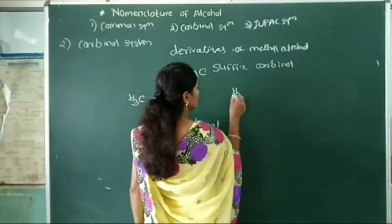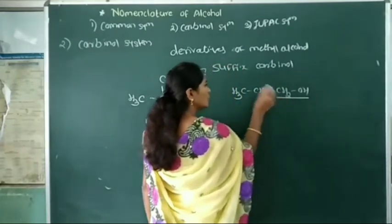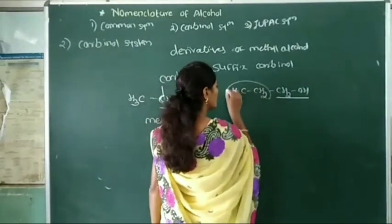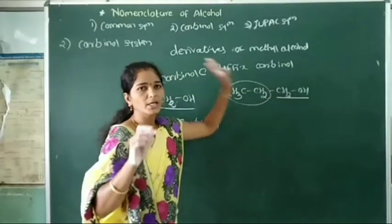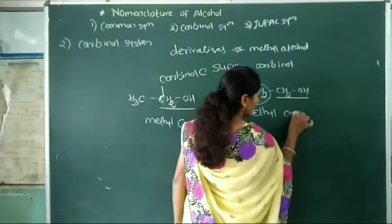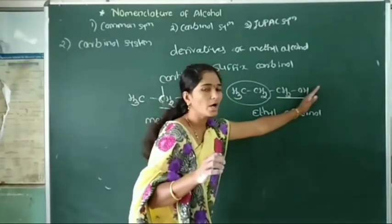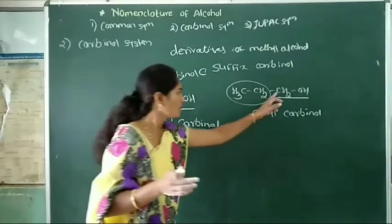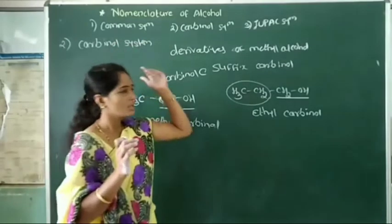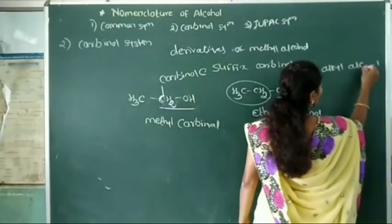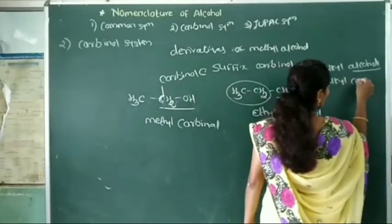Let us take another example: CH3–CH2–CH2OH. In this alcohol, the carbynol group — CH2OH — is attached to an ethyl alkyl group. Then the name of this alcohol is ethyl carbynol. Understood everyone?